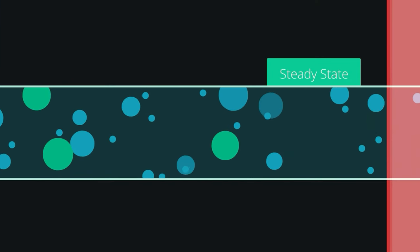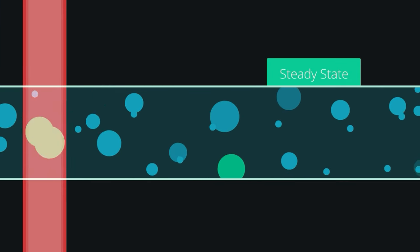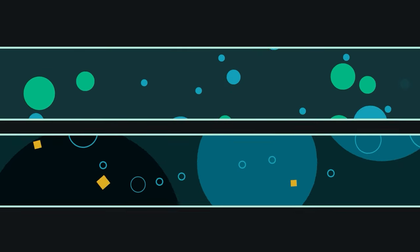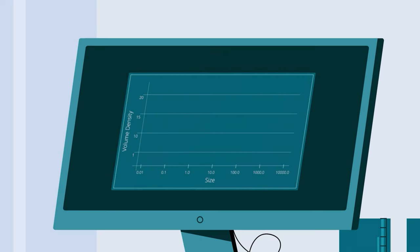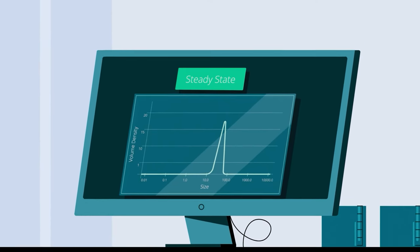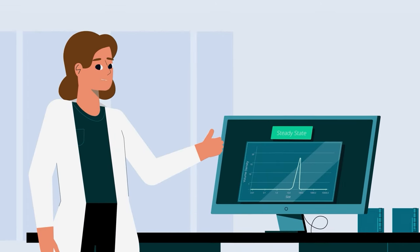The steady state describes the particles observed most of the time, while the transient state describes any temporary events from particles or otherwise observed only occasionally. This differentiation gives you more representative data for your sample in the steady state and greater confidence in your results.